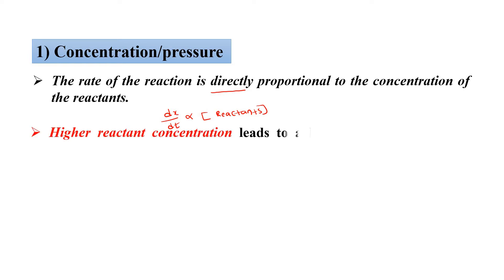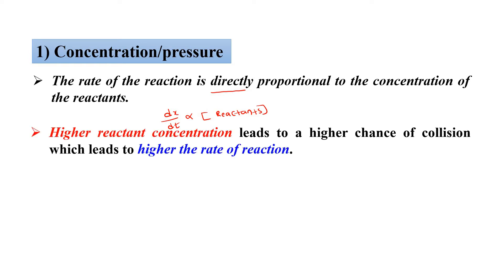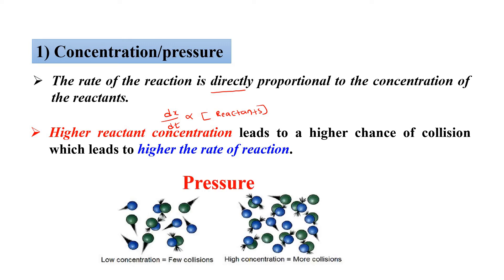Higher reactant concentration leads to a high chance of collision. When you have more concentration, you have more number of molecules, so more collisions take place between the molecules, which leads to a high rate of reaction. For example, in terms of pressure: when you have low concentration, collisions are very few. At high concentration, more collisions take place, leading to more pressure. Less collision means less pressure.